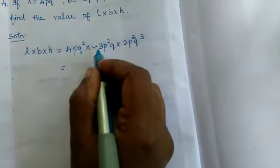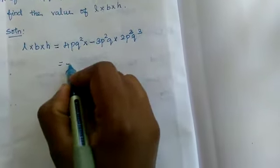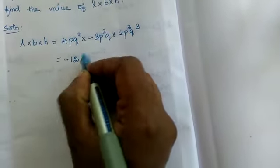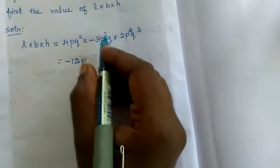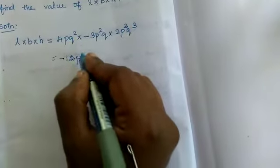Now multiply the values. Now 4, 3, multiply the constants: 4, 3 is minus 12. Now P square into P, 2 plus 1, 3.